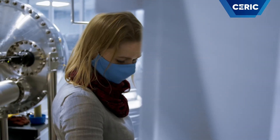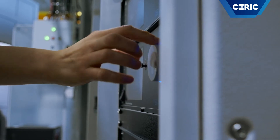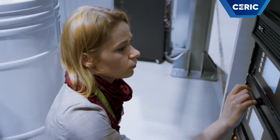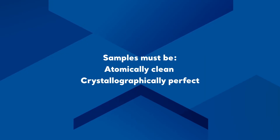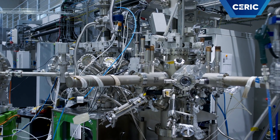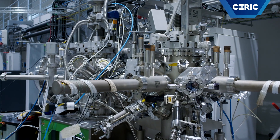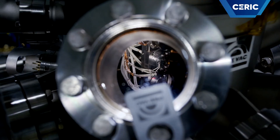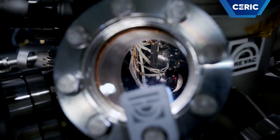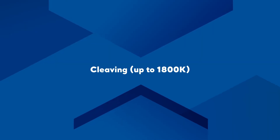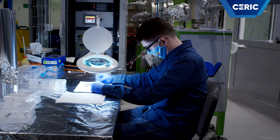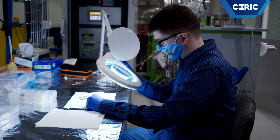ARPES is surface-sensitive. The photoelectrons can make it to the vacuum only from the few outermost atomic layers of the sample. Therefore, samples must be prepared atomically clean and crystallographically perfect. They may be brought to the instrument vacuum-ready for studies in the ultra-high vacuum transport suitcase, synthesized or cleaved in-situ, cleaved, heated up to 1,800 Kelvin, ion-beam bombarded, or grown in ambient conditions, reacted in gas cells — all preparation techniques available at the ORPHEUS beamline.